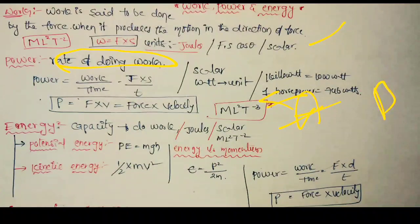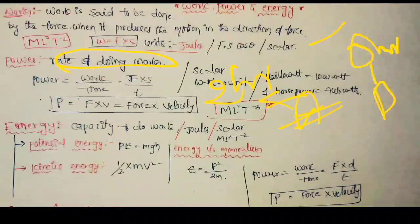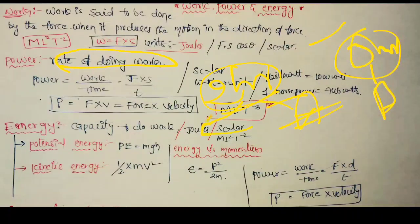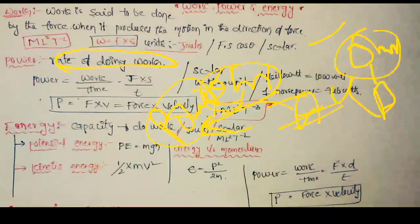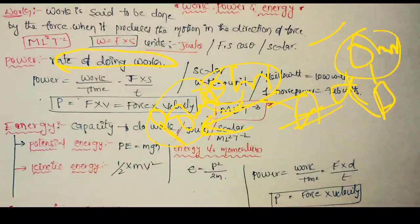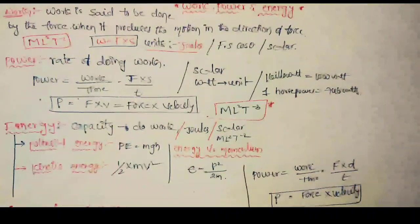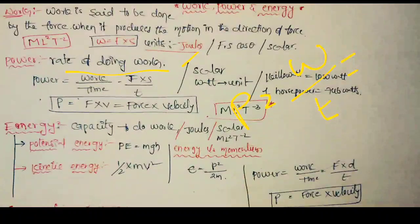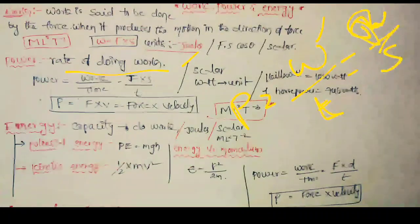If two persons do the same work, one completes it in 2 hours and the other in 3 hours — the rate of doing work is different. The one who takes less time has more power. Power is the rate of doing work: P equals W by T.